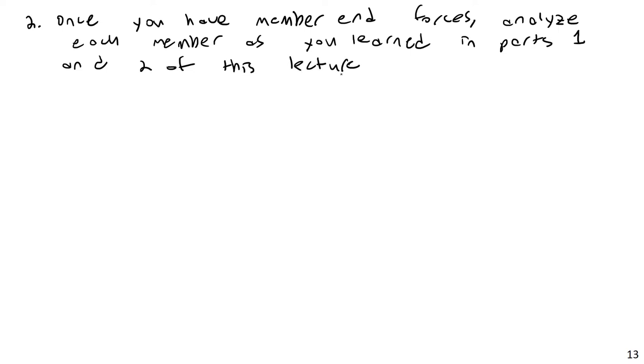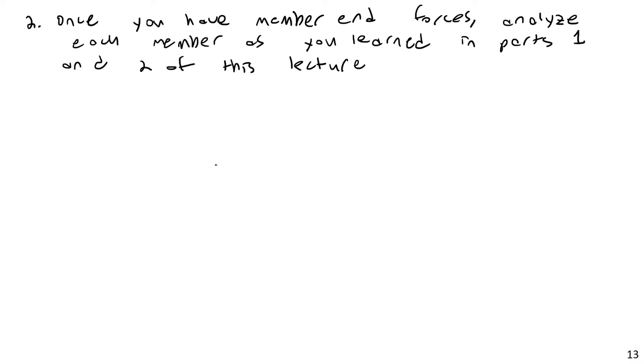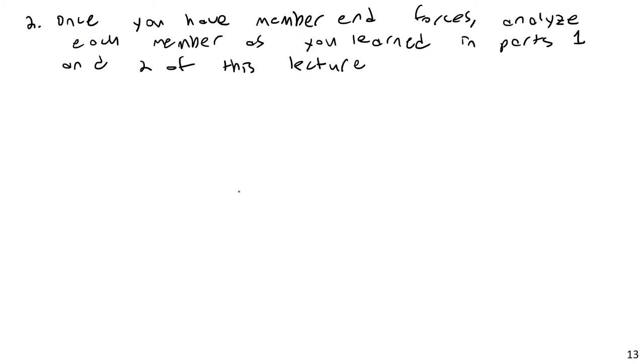So again, you'll take a, well, you already have the member end forces, so you don't even have to do the first step, which is usually to apply global equilibrium to a member to find its external reactions. So we basically already have the external reactions for that member. It's the member end forces. And so, since you're interested in the force at point A, I would basically cut this member here.